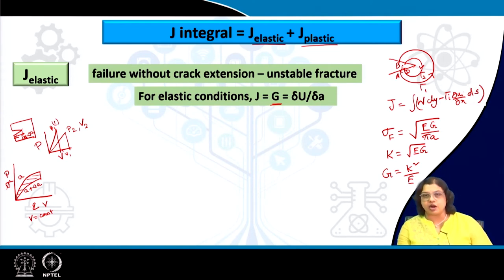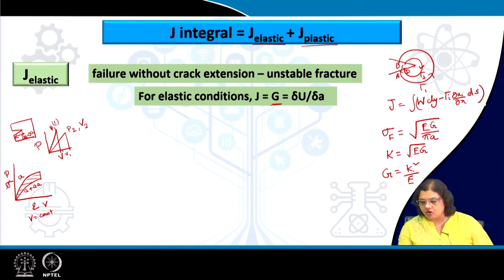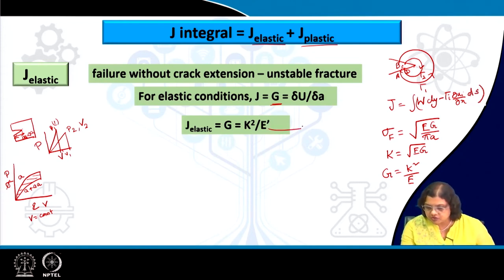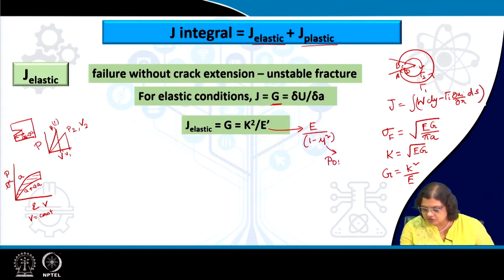For the elastic part of J integral, J_elastic equals G, or K² / E — but more precisely K² / E', because we are considering plane stress conditions and must account for Poisson's ratio contraction in the perpendicular direction. E' is given by E / (1 - mu²), where mu is the Poisson's ratio and E is the elastic modulus.